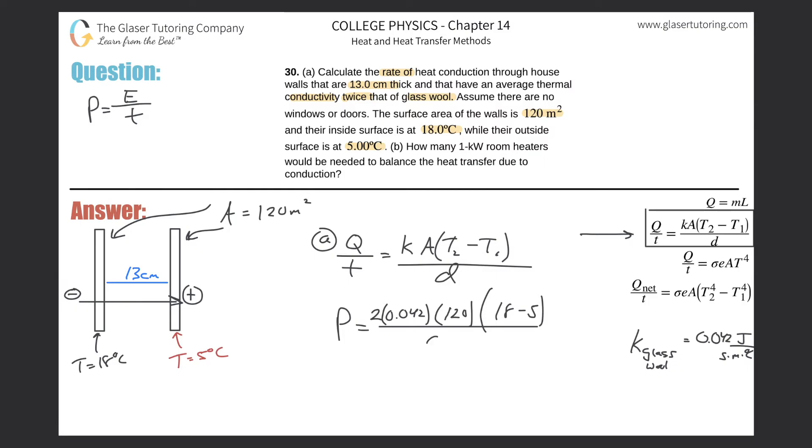The distance was 13 centimeters, but we know that we need that in meters. Let's calculate. This is going to be 2 times 0.042 times then 120 times then 13, divided by 0.13. And this is about 1,008.